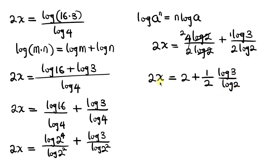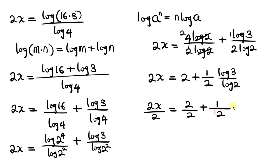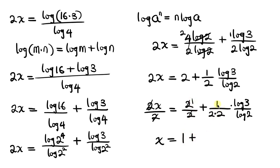Now since we're looking for x, I'm going to divide through by 2. Dividing the left hand side, 2x, by 2, and the right hand side as well. Notice that 2 cancels, leaving x equal to 1, plus 1 over 4 times log 3 over log 2.